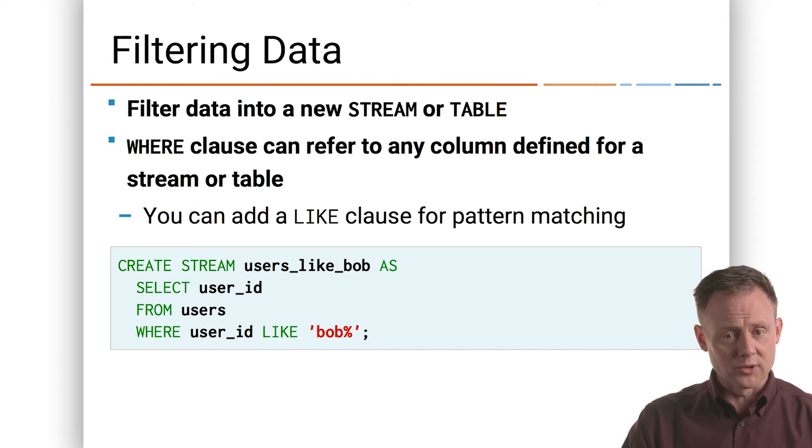So as you see here, I'm creating a new stream called users like Bob, hey, those are great users, as a select of just user ID from users where user ID is like Bob star, anything beginning with Bob. So filtering is absolutely an option and equality and inequality operators are also supported.